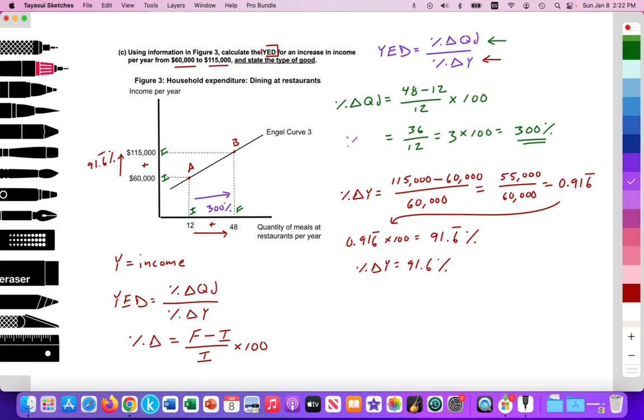Here we have percent change in the quantity demanded, which is 300%. And then here we have the change in income. So we can calculate YED equals the percent change in quantity, which is 300, divided by the percent change in income, which is 91.6 repeating percent. And if you divide that, we'll get 3.27, if I remember correctly, repeating percent.